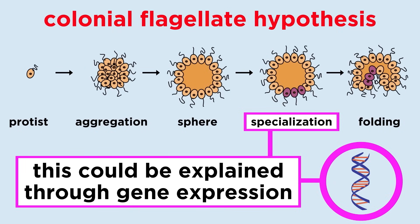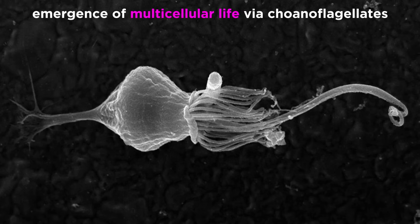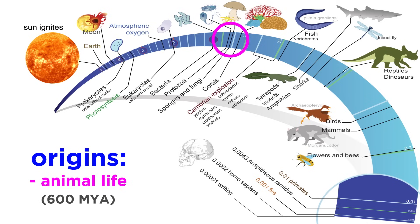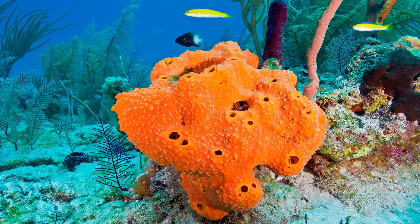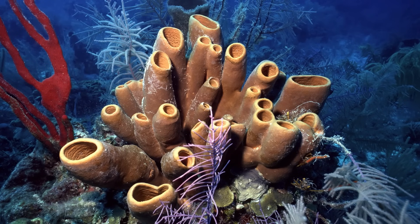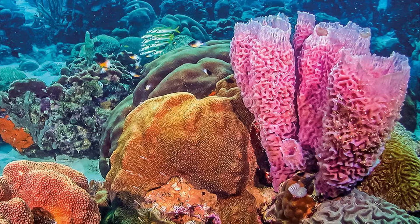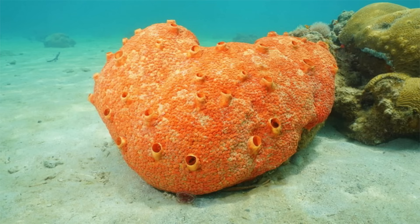Earlier in this series, we talked about the origin of multicellular life. We discussed choanoflagellates and sponges, noting that these represent the emergence of animal life around 600 million years ago. Since organisms resembling modern sponges are likely the ancestors of all animals on earth, it is with such organisms that we will begin our exploration of the animal kingdom.